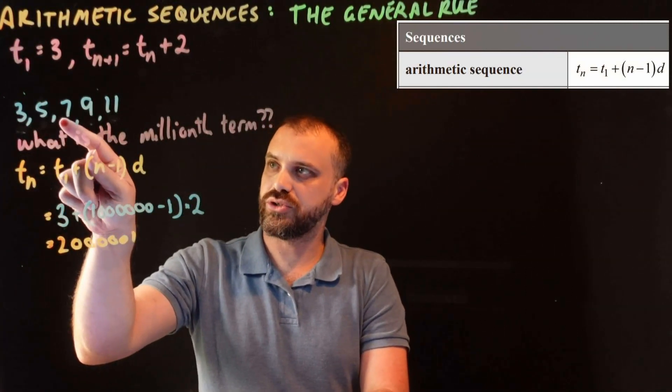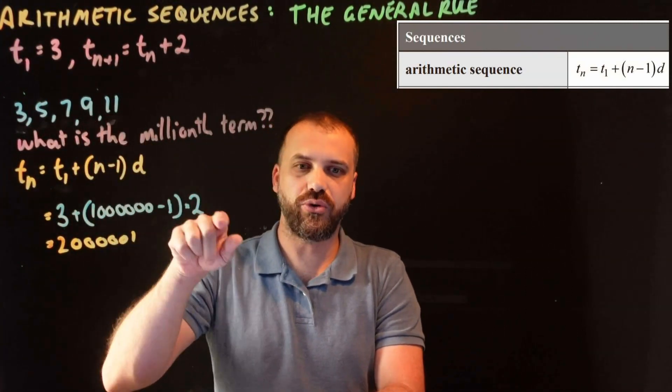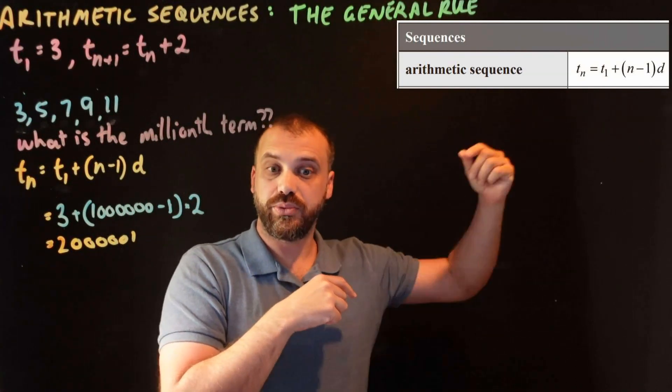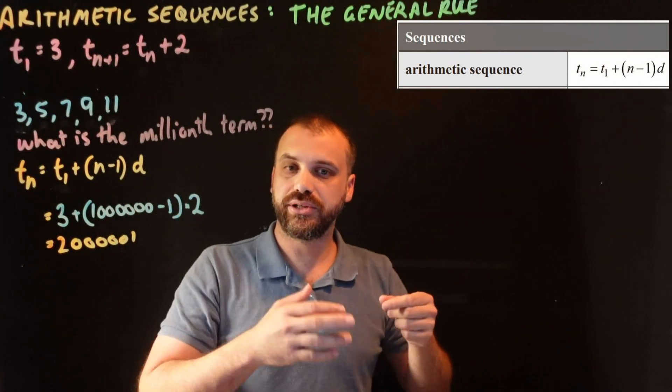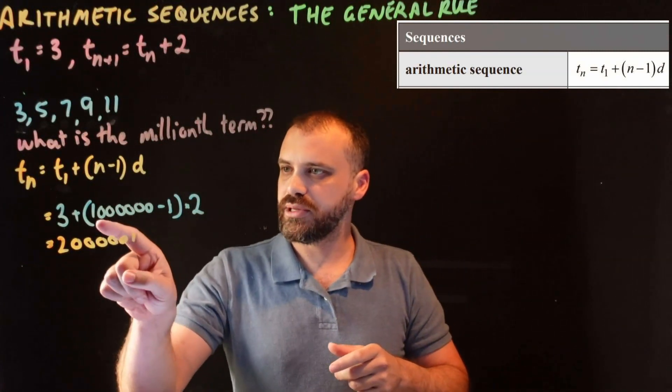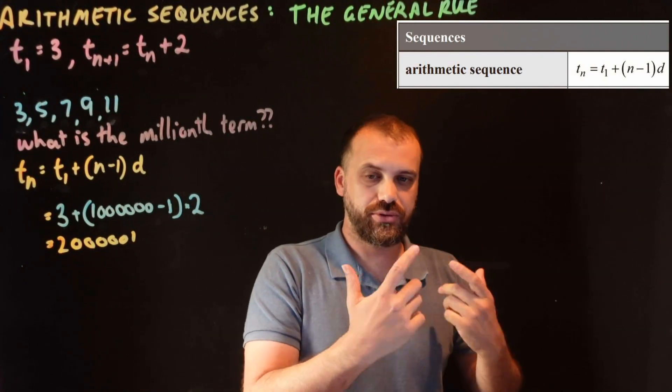1, 2, 3, 4. We have to do 4 common differences to get to the fifth term. So whatever term you want to get to, in my case, the millionth term, there's not going to be a million common differences. There's going to be a million minus 1 common differences.